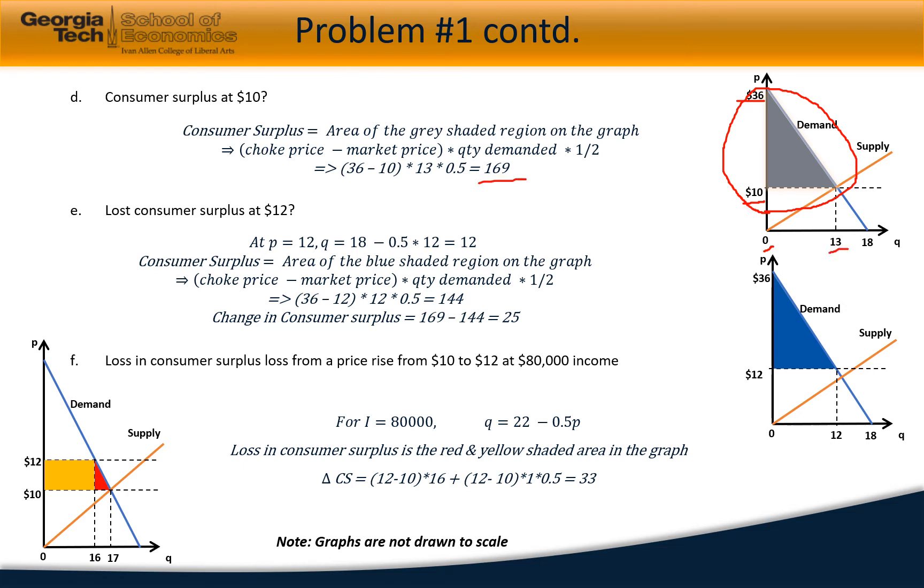The consumer surplus at $12 is a little smaller region, now bounded graphically by the blue region which is between $36 and $12 on the price axis and 0 and 12 on the quantity axis. That turns out to be 144. Therefore, the change in consumer surplus is 169 minus 144, which is 25.